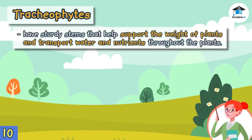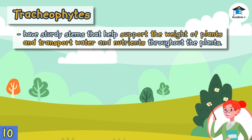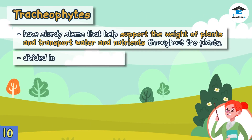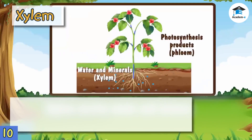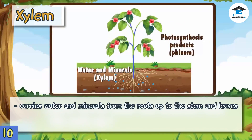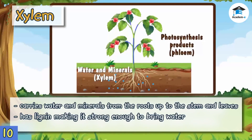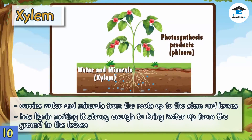Tracheophytes have sturdy stems that help support the weight of plants and transport water and nutrients throughout the plant. The stem is divided into xylem and phloem. Xylem carries water and minerals from the roots up through the stem and leaves. The substance called lignin makes the xylem strong enough to bring water up from the ground to the leaves.